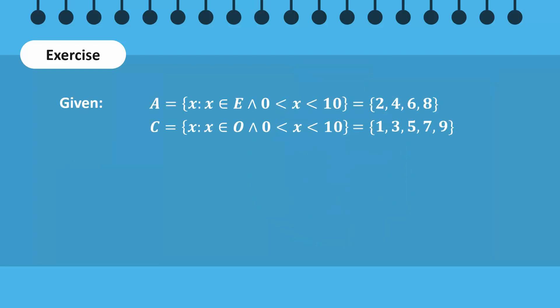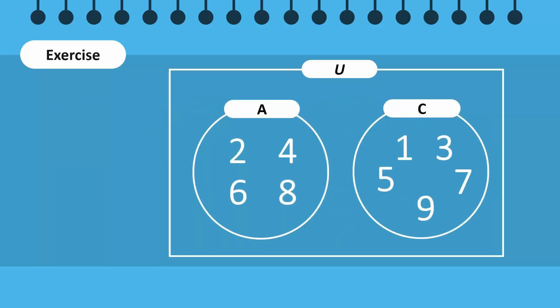Notice that sets A and C have no common elements — they are disjoint sets. Therefore, their circles do not overlap. A intersection C will then be an empty set, so no region will be shaded. Note that we always include the universal set in our Venn diagrams, since all sets are subsets of the universal set.